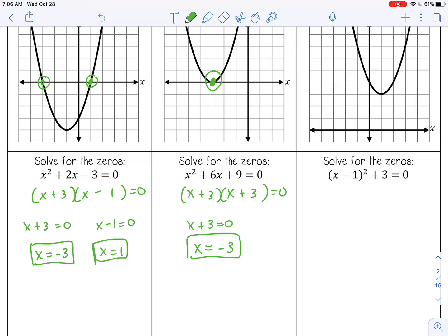And then the last one, let's use square roots to solve for this one because it's not a trinomial. I can subtract 3 from both sides. And then I can take the square root of both sides.